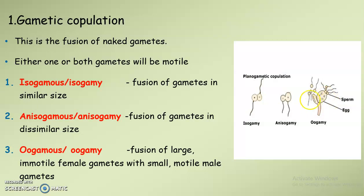Here we can see the egg and the sperm — this is oogamy. Therefore, based on the size of the gametes, we can see three types of gametic copulation: isogamy, anisogamy, and oogamy.